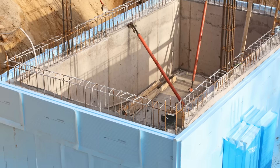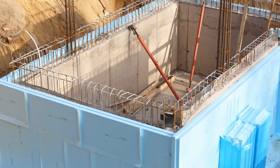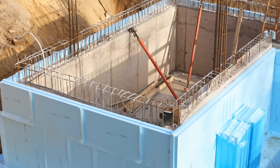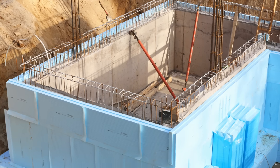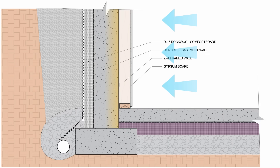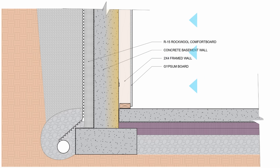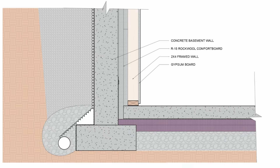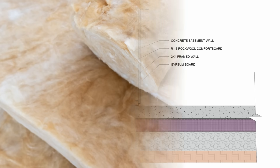If we install this continuous insulation layer on the outside of the basement wall assembly, air permeability and vapor permeability would not matter. We essentially have a perfect wall where the structure is kept at interior conditions, the water and air control layer is on the outside in the form of the waterproofing, and it's not thermally isolated. However, if we push that continuous insulation layer to the interior side, that concrete wall no longer is thermally coupled to the interior — it's cold and remains relatively cold throughout the year.